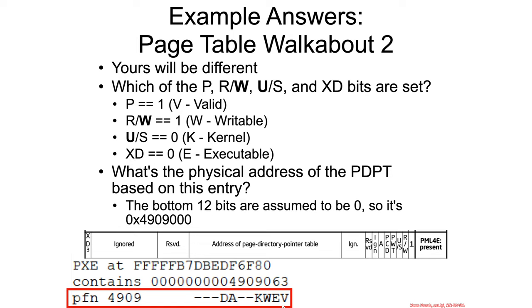What is the physical address of the page directory pointer table based on this entry? Well, it was these middle bits here. The 12 bits right here are used as flags, so you can basically ignore the 12 bits. Drop off the last four hex nibbles, and it's just 4909000. You assume zeros for the bottom. That's the physical address, 4909000.